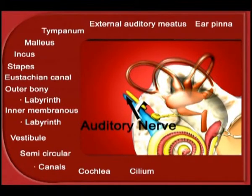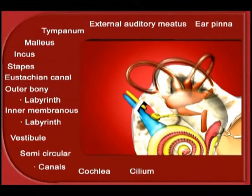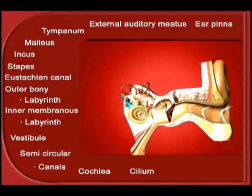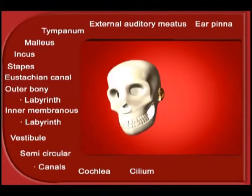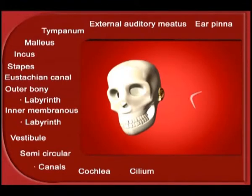The cilia in the endolymph respond to different wavelengths of sound. Some sounds, especially loud noises, can enter the inner ear through the bones of the skull instead of through the pinna. Since we are conducting them through the bones, this is called bone conduction.